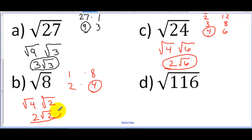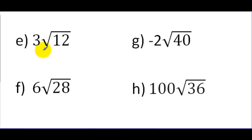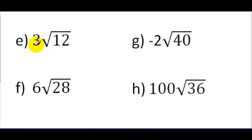So this is the simplified version: 2 times the square root of 2. You can try it with the square root of 116 — it's a slightly larger number with more factors — on your own. Now, here are a few more examples of simplifying radical expressions. These four examples have a number sitting outside: I have a 3 and a negative 2. What's really happening here is multiplication — this is saying 3 times the square root of 12.